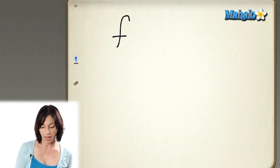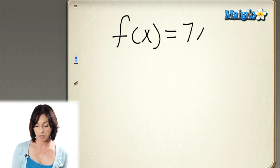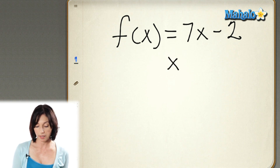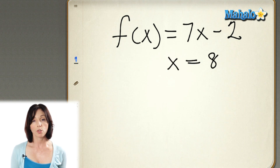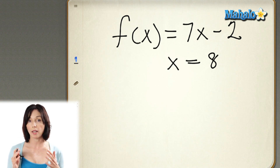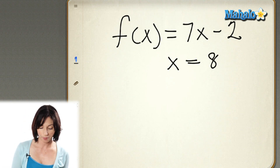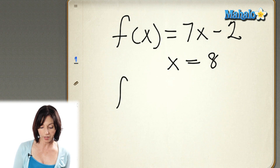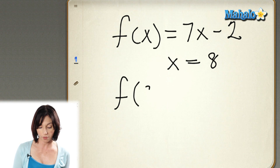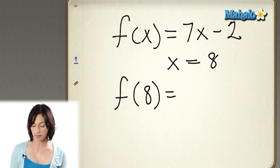Suppose I tell you that I have the function f of x and that's equal to 7x minus 2. And then suppose I tell you that x is equal to 8. So the question is, what is f of x? All you have to do is plug the value of x into the function and then calculate. Instead of writing f of x, I want to know what f is at a specific value — in this case when x is 8. So I write f of 8 equals, and now anywhere I see an x, I put the 8 in instead.